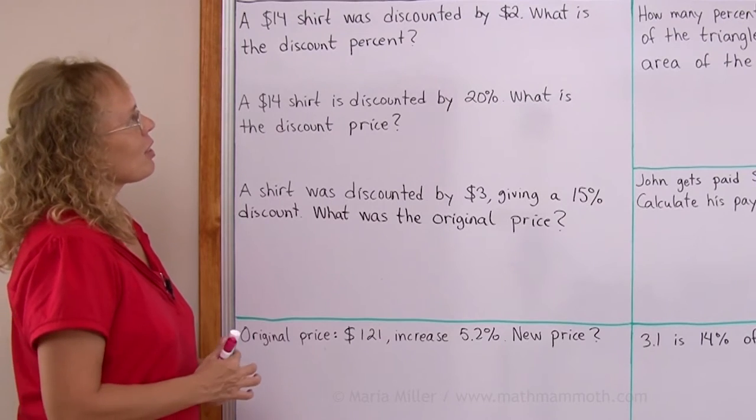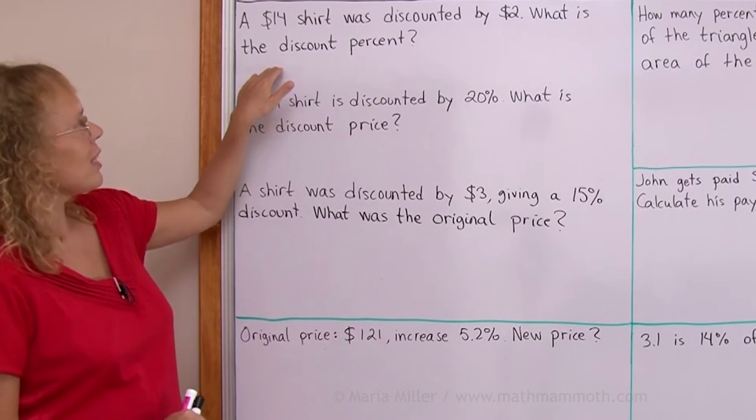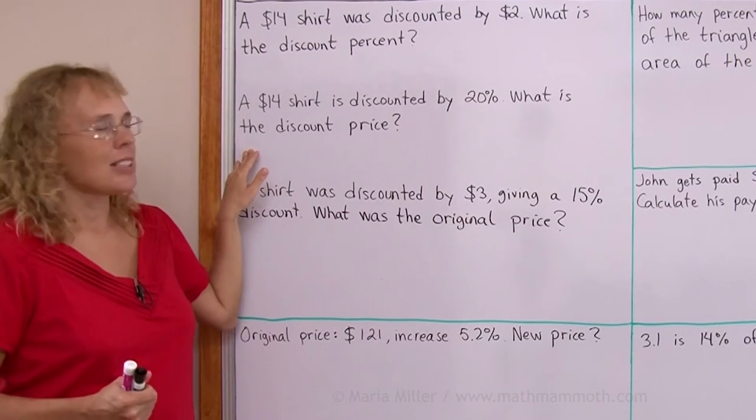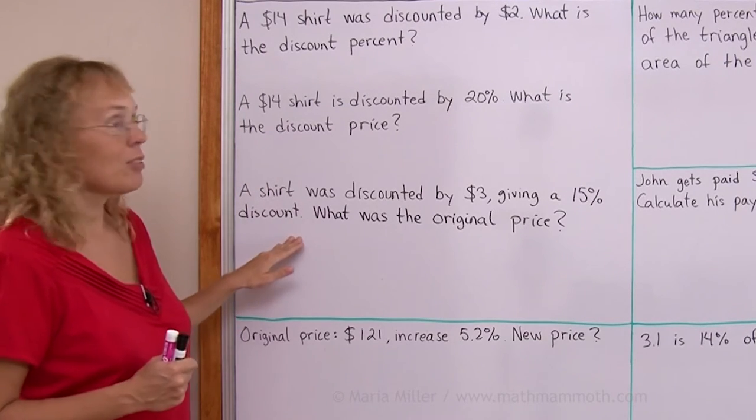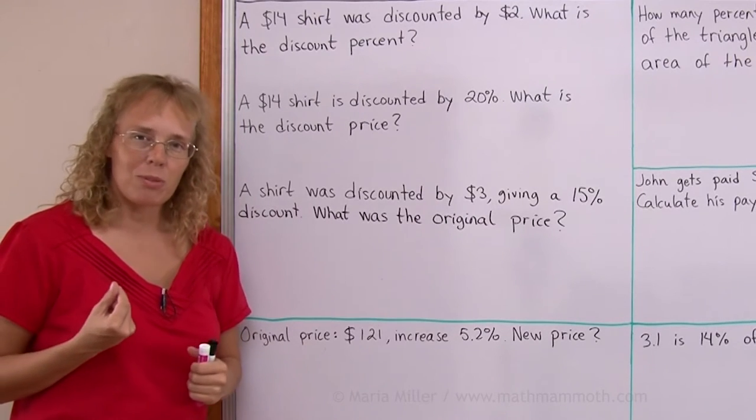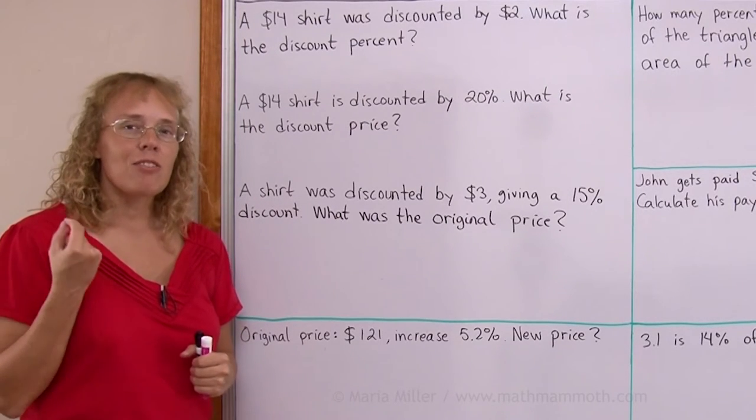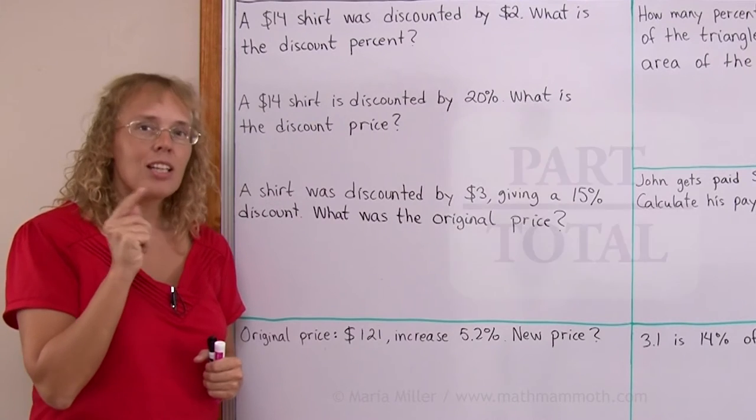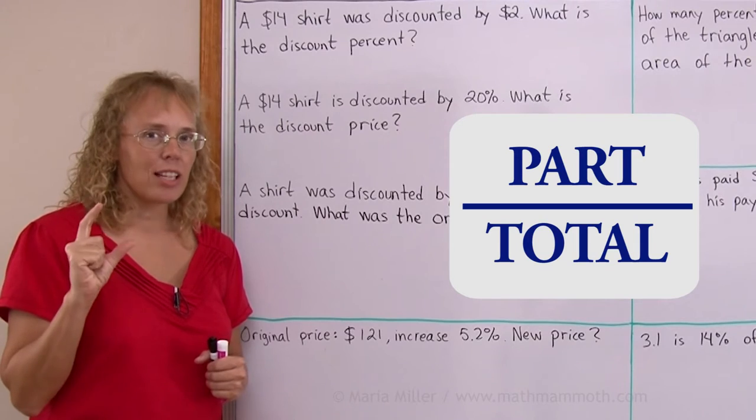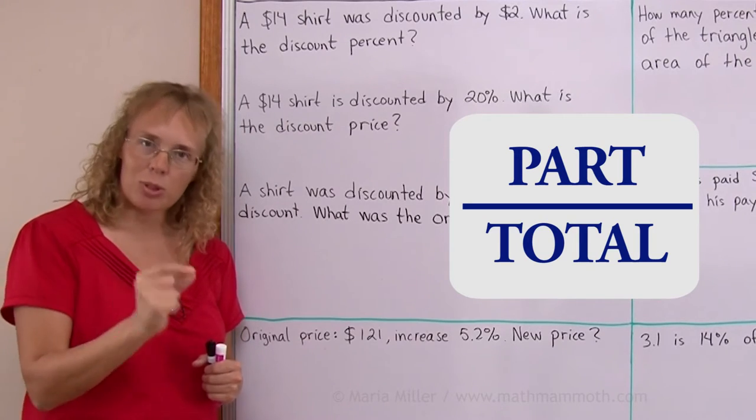So let's look at these carefully. In the first one it asks for the discount percent. In the next one it is asking for the discount price and here for the original price. And I hope you remember from the last lesson this little formula that you have a part over total, that's a fraction. Part divided by total, that's a fraction and then you can write as a percent.